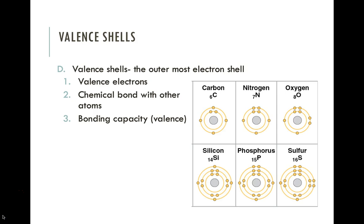Let's begin part two of chapter two with a review of valence shells. Valence shells are the outermost electron shell in an atom, and the electrons in there are called valence electrons. Electrons like to reside in pairs, but they don't pair up until there are at least four electrons in that outer shell. Any unpaired electrons are going to be the electrons involved in a chemical reaction, and the number of unpaired electrons in the valence shell is called the bonding capacity.